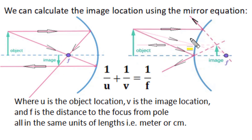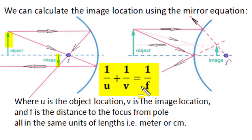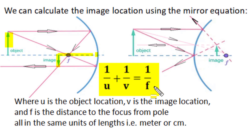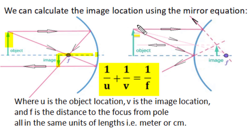When the object moves between the center of curvature and focus, the real and inverted image enlarges and shifts from center of curvature toward infinity. When an image forms in front of the reflecting surface where light rays can reach, it is called a real image, which can be projected on a screen and is always inverted. When image forms behind the mirror where light cannot reach, it is called a virtual image, which cannot be projected on screen.